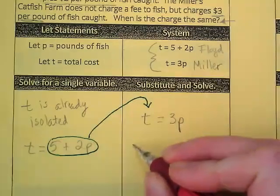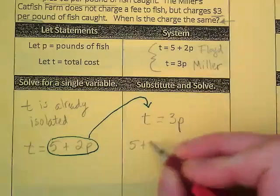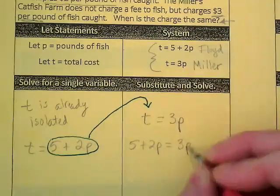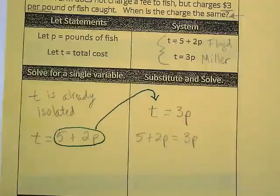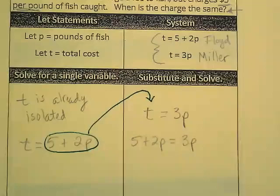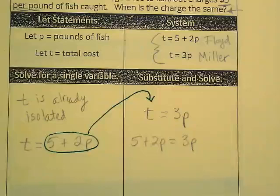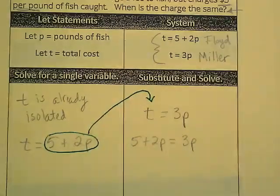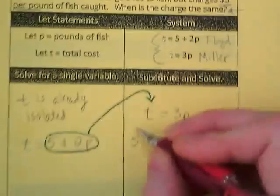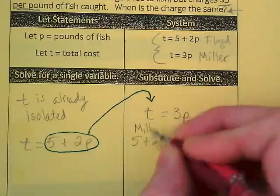So I end up with 5 plus 2p is equal to 3p. I want you to notice here I love it when systems are like this where we have two different things equal to a total. We just take those two equations that we first wrote up here as expressions and we make them equal to each other.